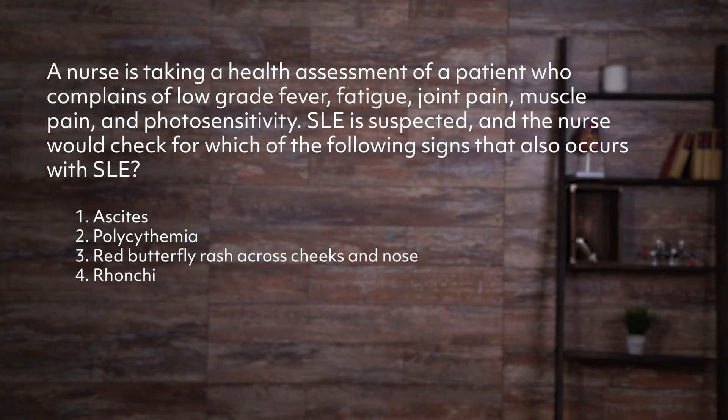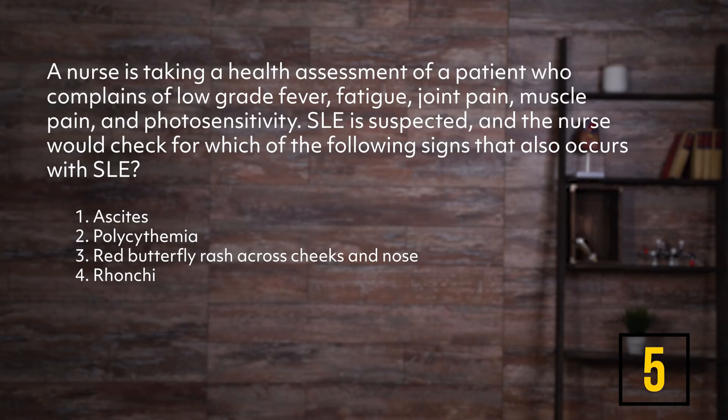Here's another question. A nurse is taking a health assessment of a patient who complains of a low-grade fever, fatigue, joint pain, muscle pain, and photosensitivity. SLE is suspected, and the nurse would check for which of the following signs that occurs with SLE. Number one: ascites. Number two: polycythemia. Number three: red butterfly rash across the cheeks and nose. The red butterfly rash across the face is a classic sign of SLE.